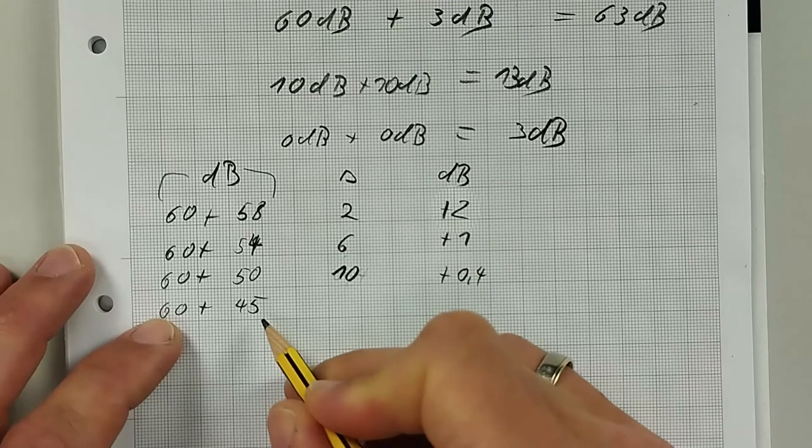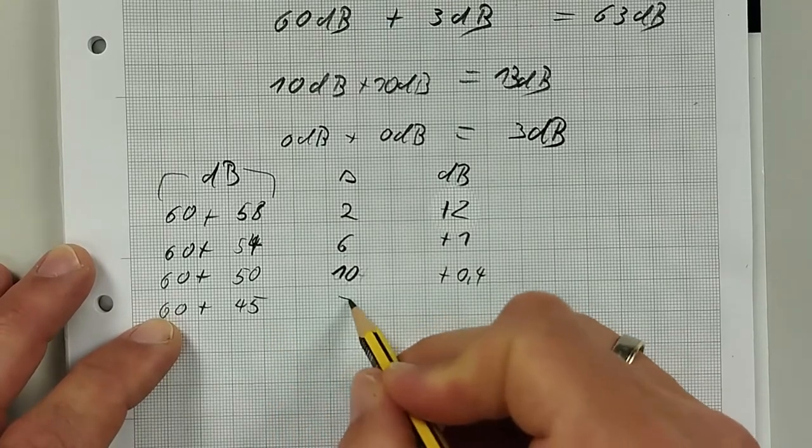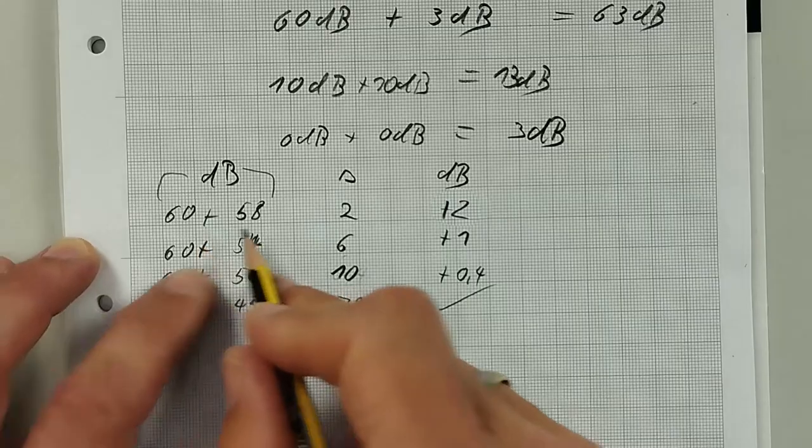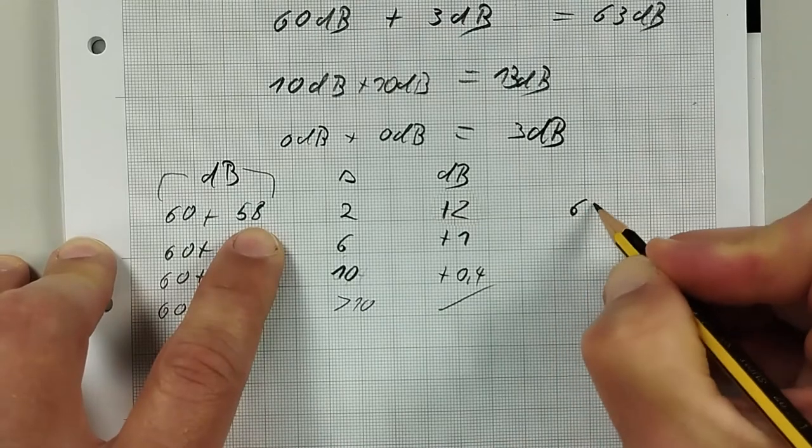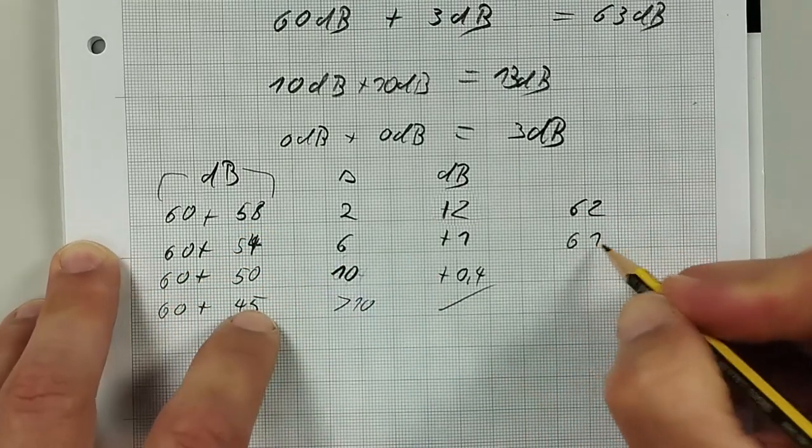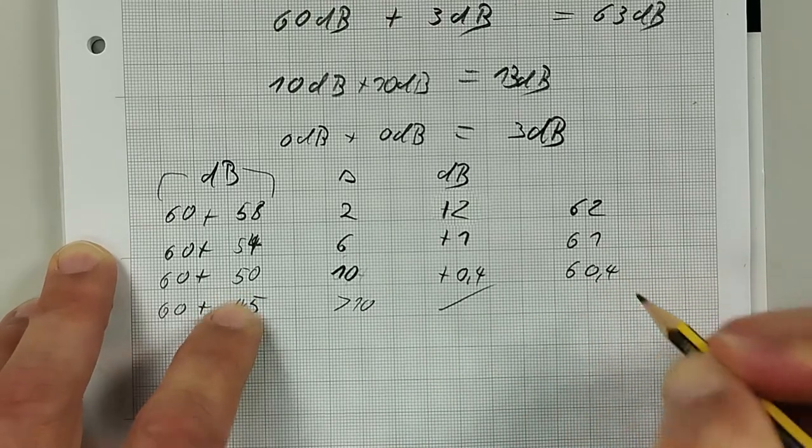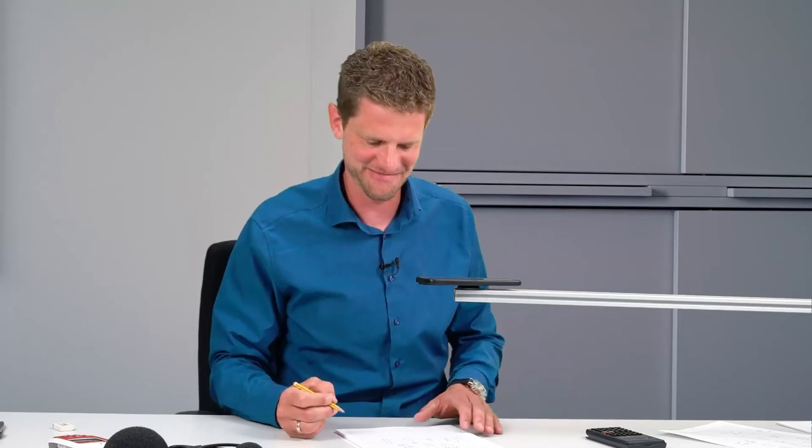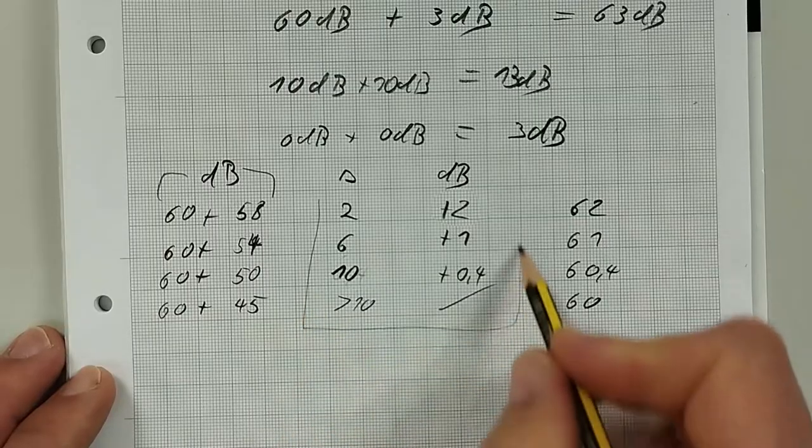So by knowing this, you can now calculate: 60 plus 58, that means it's 62. 60 plus 54, this is 61. 60 plus 50, this is 60.4. And 60 plus 45 is still 60 without typing. This is so fast. Just keep this area in mind and you are quite impressive. So let me check now if you already got it.